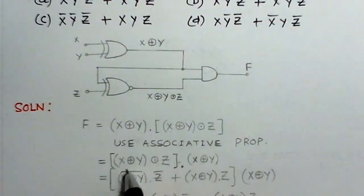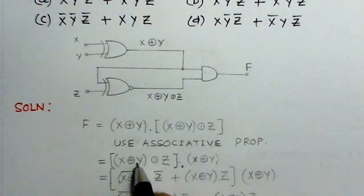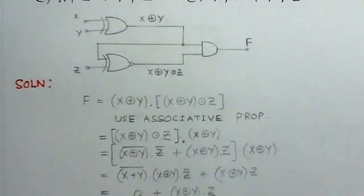Now, this bracket term we can further expand, because this is exclusive NOR of this first term and this second term. So, using the SOP expression, this would be: (X exclusive OR Y) complement times Z complement, plus (X exclusive OR Y) times Z. Because this is the SOP expression for exclusive NOR, that is X̄Ȳ + XY. And this term remains as such.